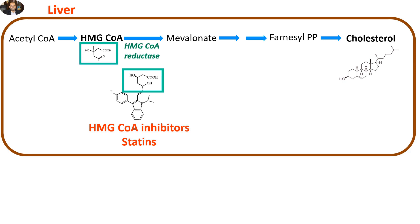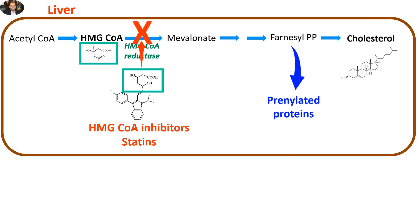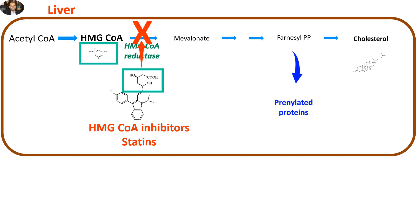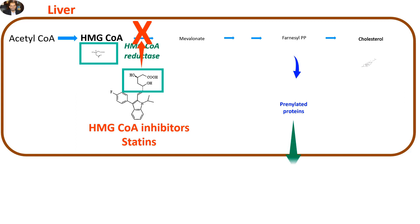Finally, the intermediate molecule Farnesyl-PP contributes to production of what's known as prenylated proteins. Inhibition of HMG-CoA reductase by statins will decrease Farnesyl-PP and the prenylated proteins. This inhibition of prenylated proteins results in some positive effects, such as improving endothelial functions.